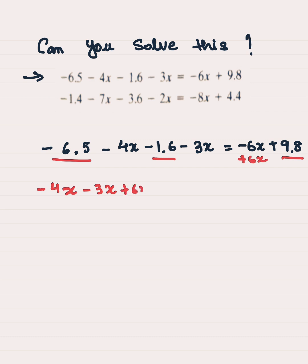I can write negative 4x minus 3x, and then bring 6x to the other side by adding 6x, which gives me negative 4x minus 3x plus 6x on the left side. Then I can take my constants to the other side. You can see that 6.5 was negative, so I can add 6.5 on both sides. Similarly, I can add 1.6 on both sides, and 9.8 was already on the right side. This way you have separated your terms.